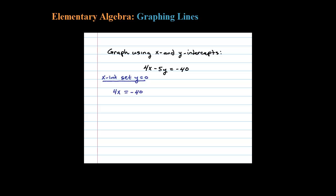Because 5 times 0 is just 0, dividing by 4, x equals negative 10. Again, that's not the x-intercept—the actual x-intercept is an ordered pair. So in this case, negative 10 comma 0.